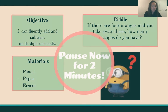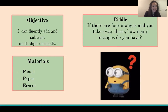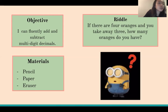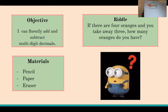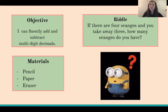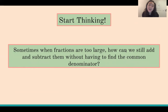Coming back together for the answer. There are four oranges — one, two, three, four — and you take away three, so I'll put three in a little grocery bag. A lot of people may have guessed one because one was left, but the answer is three. You take away three, which means you have three oranges.